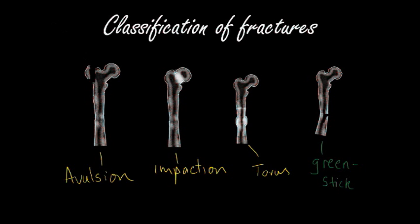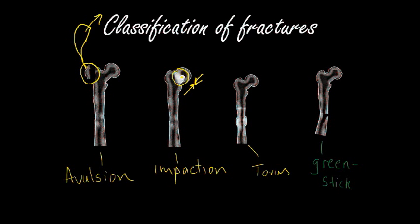An avulsion fracture is where a muscle attachment pulls a fragment of bone away — the piece of bone remains attached to the tendon, which is attached to the muscle. These tend to happen in the hands and feet where a forceful snap breaks off a bony fragment. An impacted fracture is where forces come together and the bone itself gets almost crushed and compressed. You may see this for example in a neck of femur fracture where the fragment gets impacted back onto the femur.